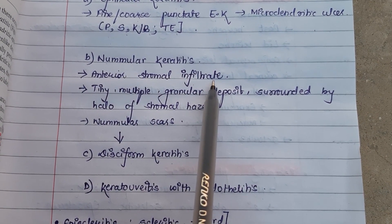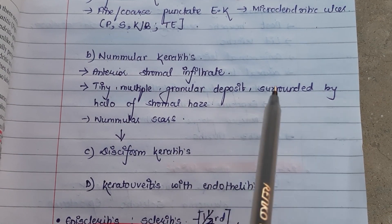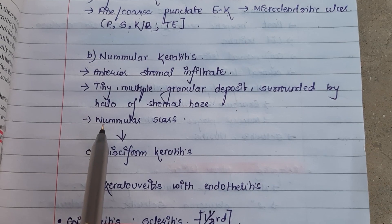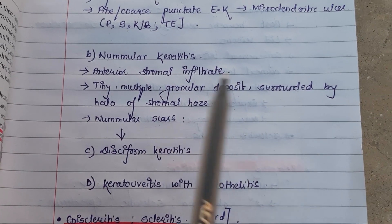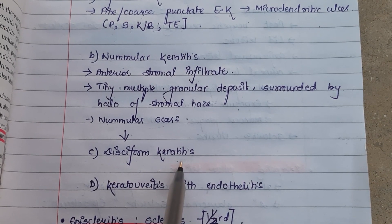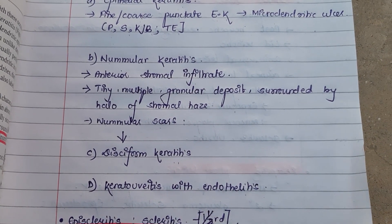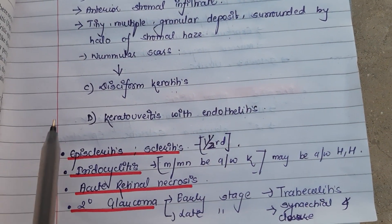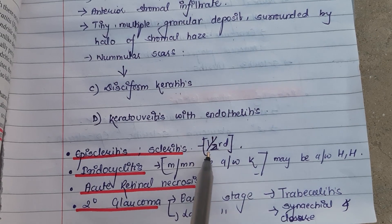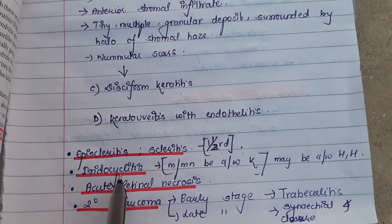Nummular keratitis occurs as anterior stromal infiltrates with tiny multiple granular deposits surrounded by a halo of stromal haze. After healing, nummular scars are left. Nummular keratitis progresses to form disciform keratitis. Another form is keratouveitis with endothelitis. The sclera can be involved as episcleritis or scleritis, seen in about one half of cases.